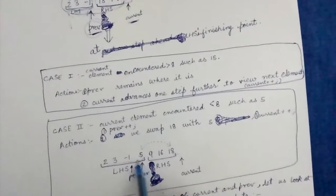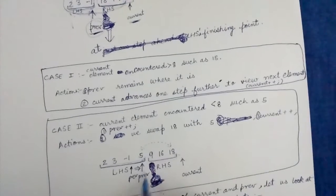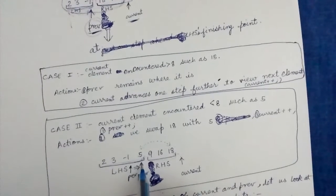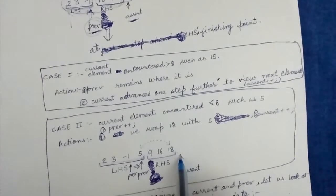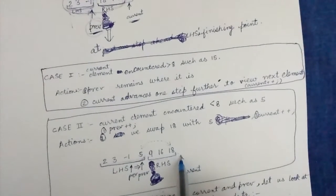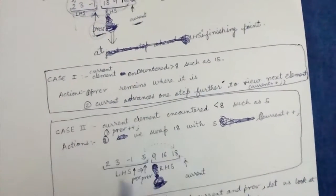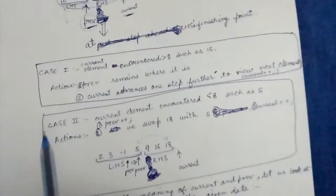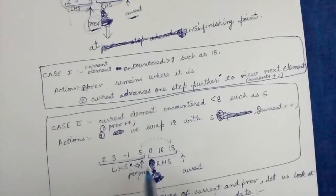After these three steps, our LHS contains elements less than pivot, our RHS contains elements greater than pivot, prev is pointing to the end of LHS, and current is pointing to the next element. Everything is in place. I hope you understood case 2.